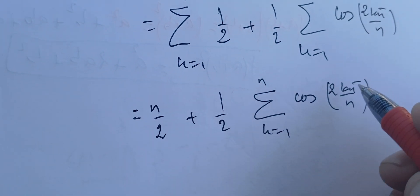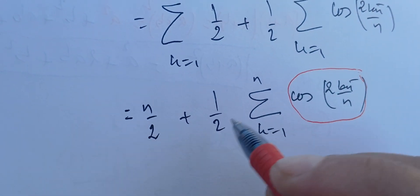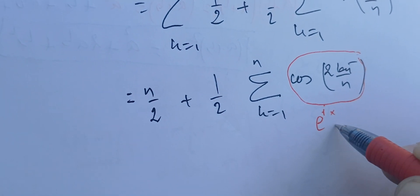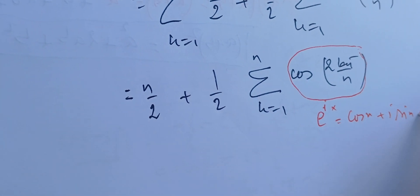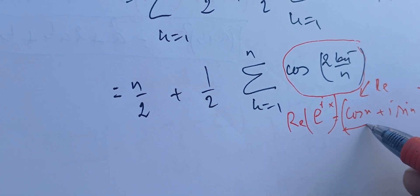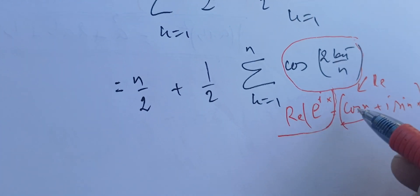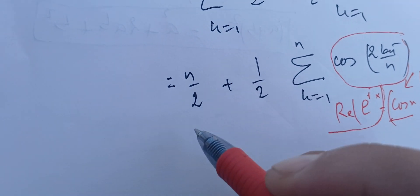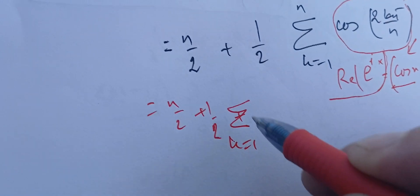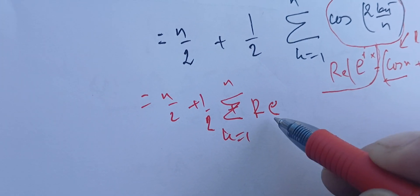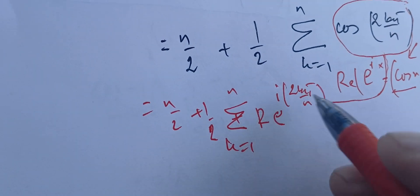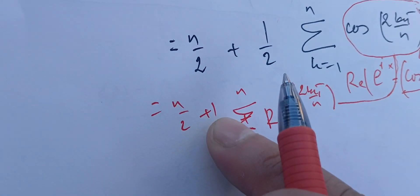Using Euler's formula: e^(ix) = cos(x) + i·sin(x), the real part of e^(ix) gives cos(x). So I'll replace the cosine sum with the real part of a sum of exponentials. We have n/2 + (1/2)·Re[Σ e^(i·2kπ/n)], k from 1 to n. Since this is a finite sum, the real part of the sum equals the sum of the real parts.